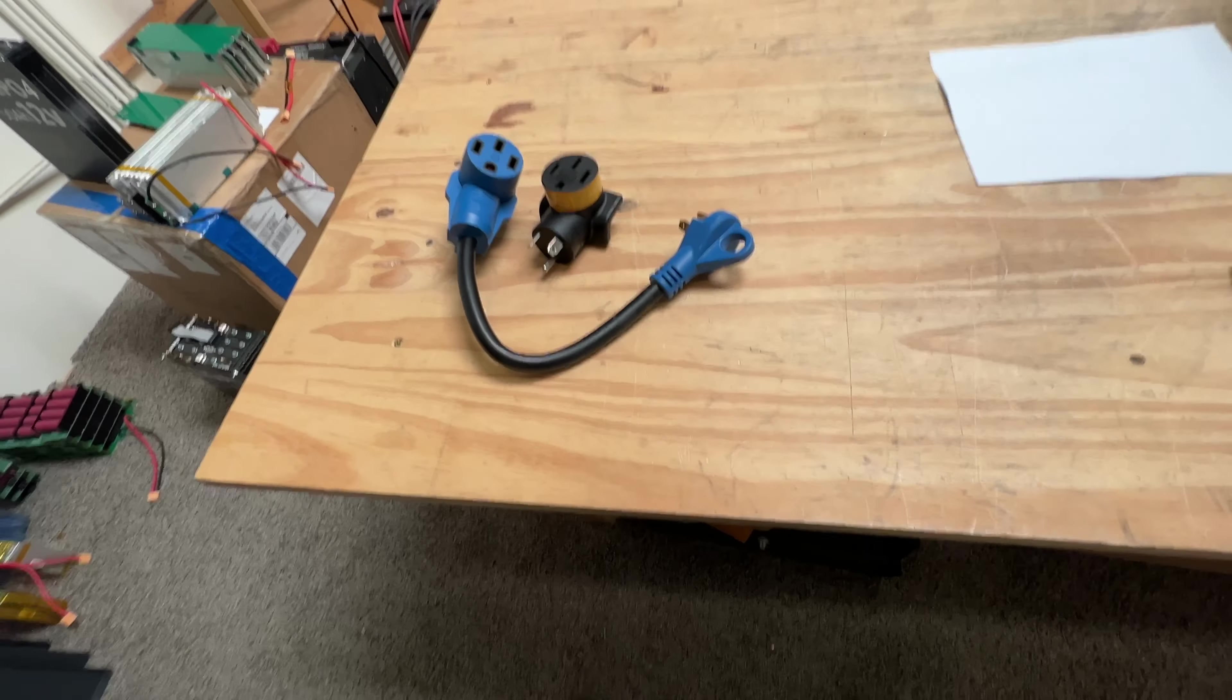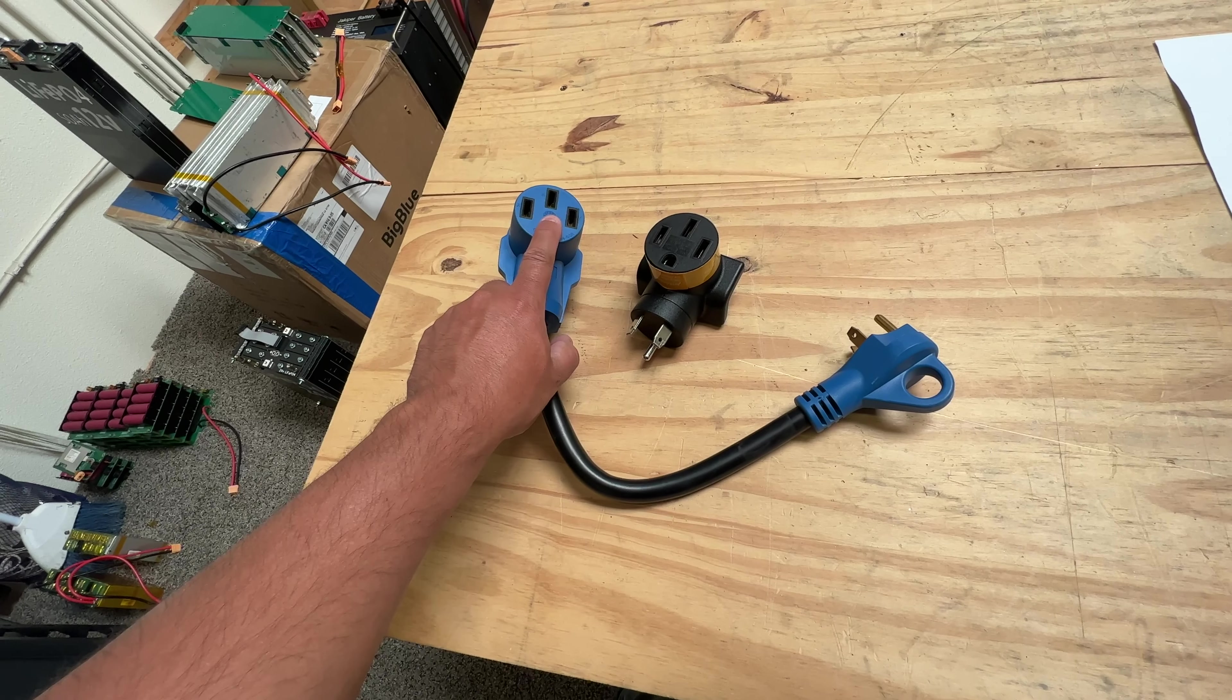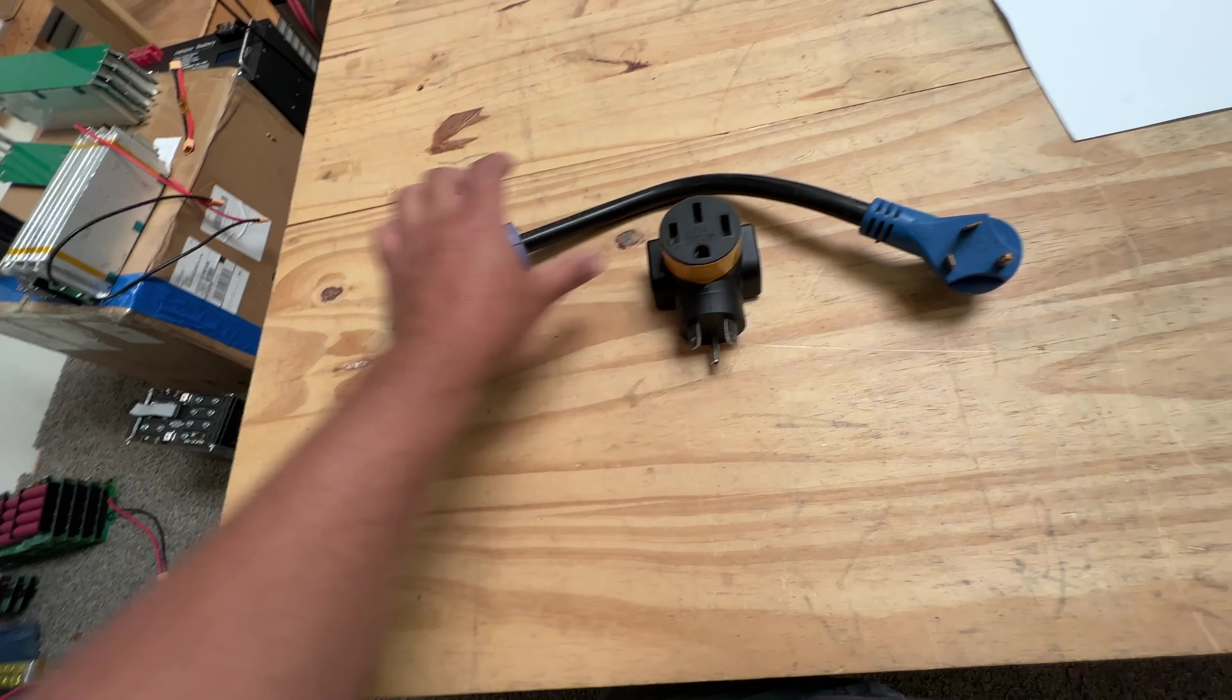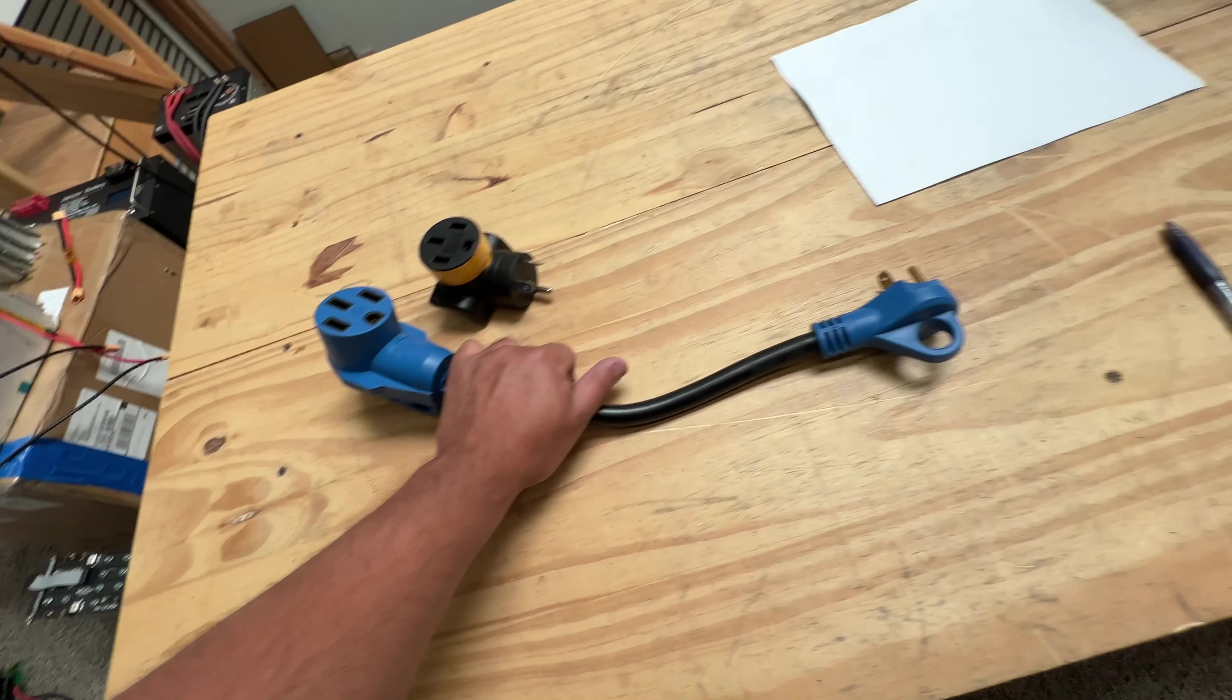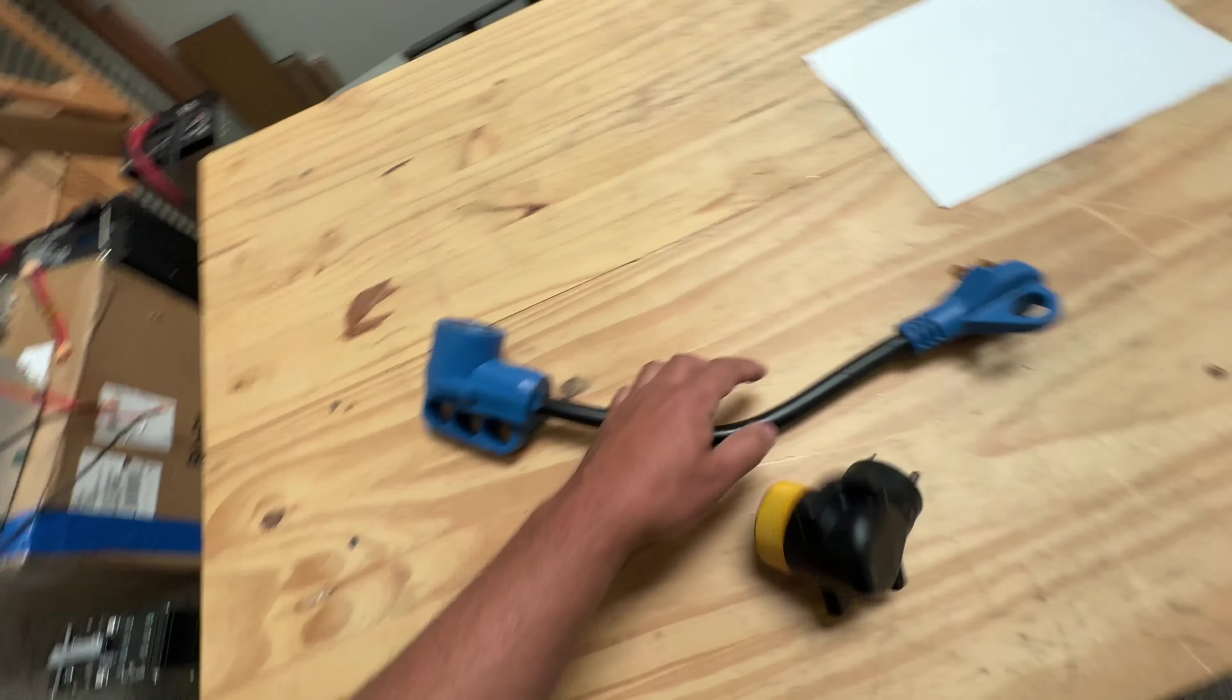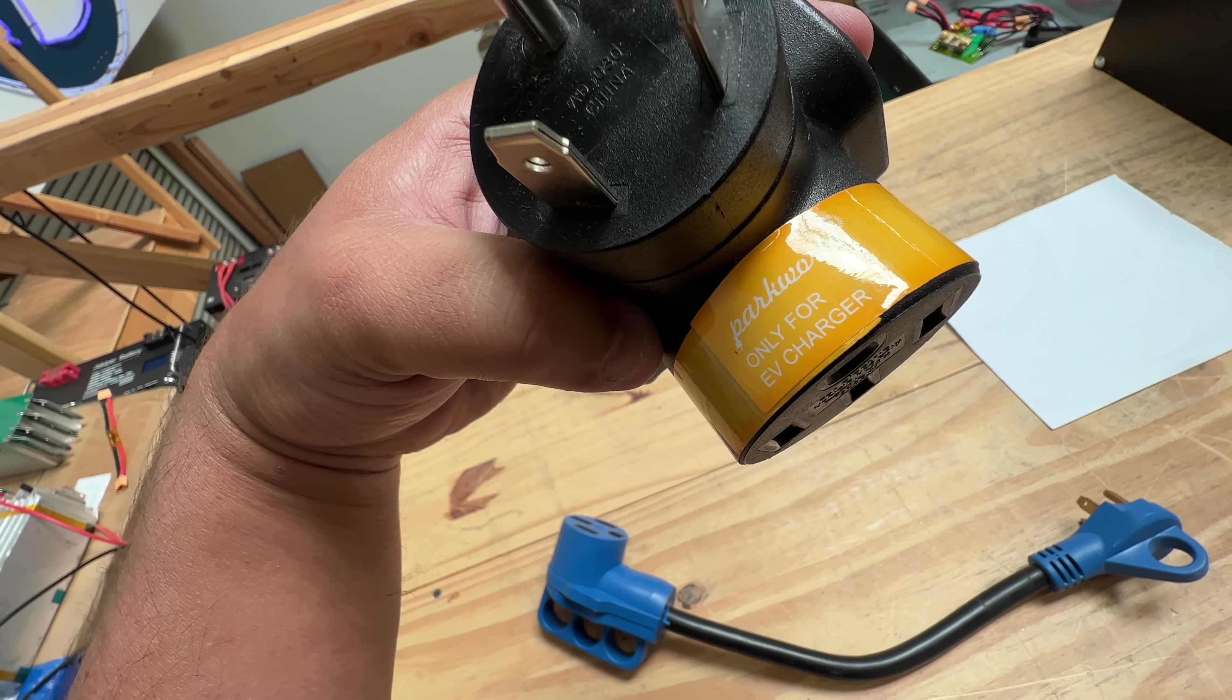All right, quick video today. I've been wanting to make a video explaining the differences between a regular 14-50 and what is called a TT-30P. These are two seemingly identical connectors—not physically, but electrically. However, they're not electrically the same because this one is marketed for EV use only.